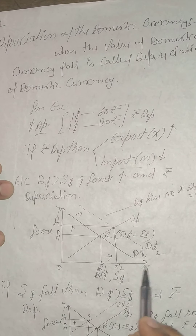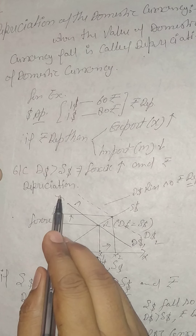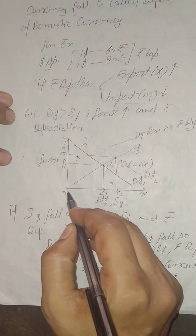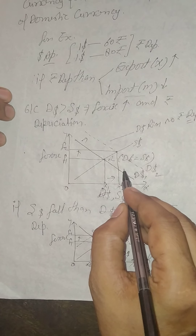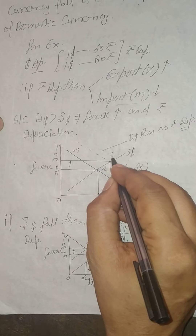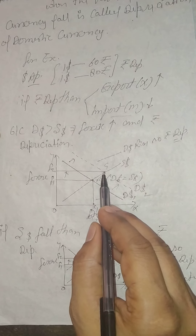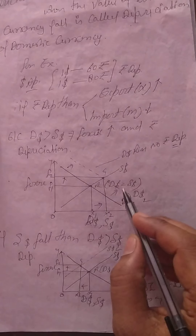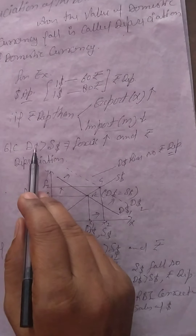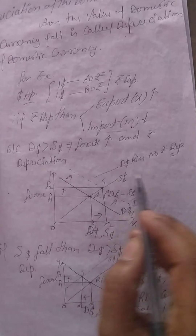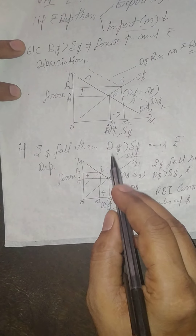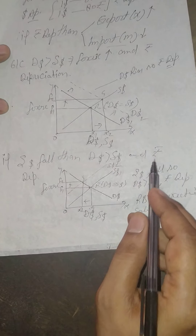When the domestic currency depreciates, exports will rise and imports will fall. When demand of foreign currency is greater than supply of foreign currency, forex rises and the domestic currency depreciates. The diagram shows OX-axis as demand and supply of foreign currency and Y-axis as forex. DD is demand of foreign currency and SS is supply. When demand of foreign currency rises, the new equilibrium shifts from point R to G, forex rises to F2 and demand and supply rise to X2, meaning rupees depreciate. Similarly, if supply of foreign currency falls, demand exceeds supply and rupees also depreciate.